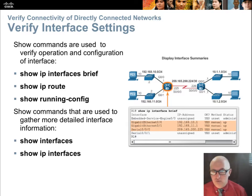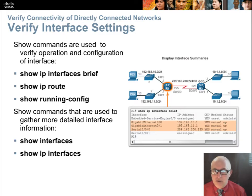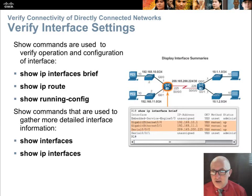'Show ip route' will show us our routing table — we want to make sure it contains at least all of the directly connected interfaces. If I'm looking at router one, my routing table should have three directly connected interfaces. 'Show ip interface brief' is a quick way to look at directly connected interfaces, verify their IP addresses, and confirm they're actually turned on — in the up state under status.